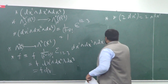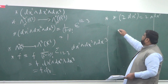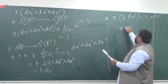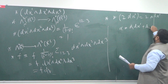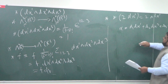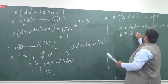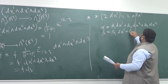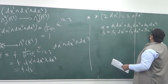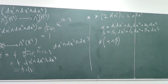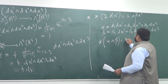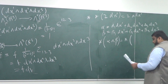Obviously you can ask: suppose alpha and beta are 1-forms, like alpha = a1 dx1 + a2 dx2 + a3 dx3, and beta is another 1-form b1 dx1 + b2 dx2 + b3 dx3. Then I can ask: what is the star of alpha wedge beta? First I need to compute alpha wedge beta and then apply the star.